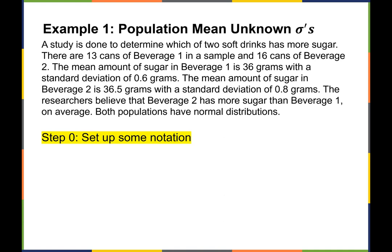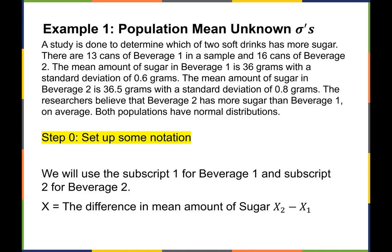Beverage 2 has a standard deviation of 0.8 grams. The researchers believe that Beverage 2 has more sugar than Beverage 1 on average, and both populations have normal distributions. We have a little step 0 here — just noting which beverage is which. We'll use subscript 1 for Beverage 1 and subscript 2 for Beverage 2. Our random variable is the difference in the mean amount of sugar between the two samples.